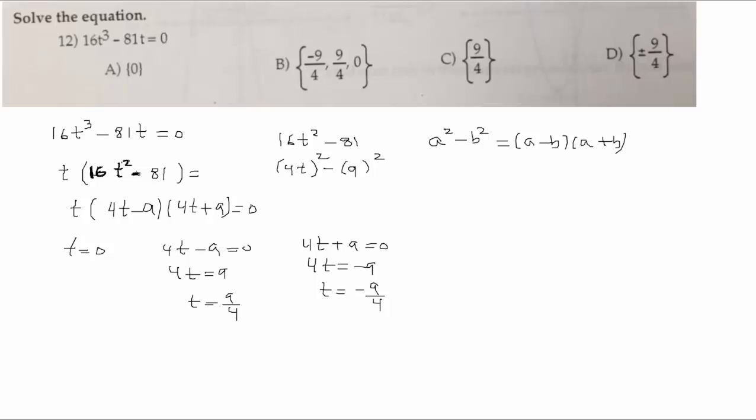So we should be the right answer here. Right choice. D. You said D like David? Yes. But we have three solutions: 0, 9 fourths, minus 9 fourths. And then B. B there, right? B.